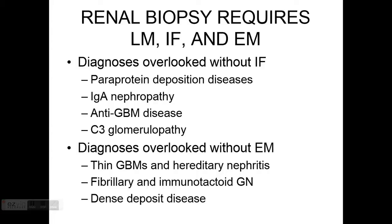Electron microscopy is great for ultrastructure and substructure, and you can see some of the details of the glomerular basement membrane and diseases that can affect it. You can't really do that by light microscopy. Also, some deposits may have fibrillary, immunotactoid, or other substructural detail, and you can view that by electron microscopy.